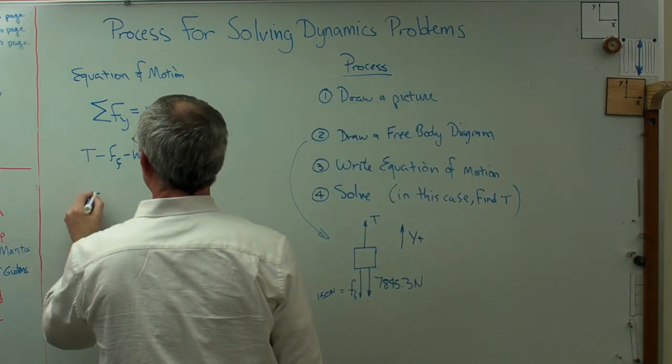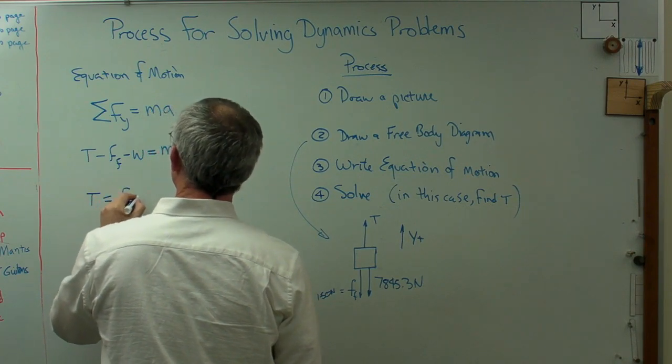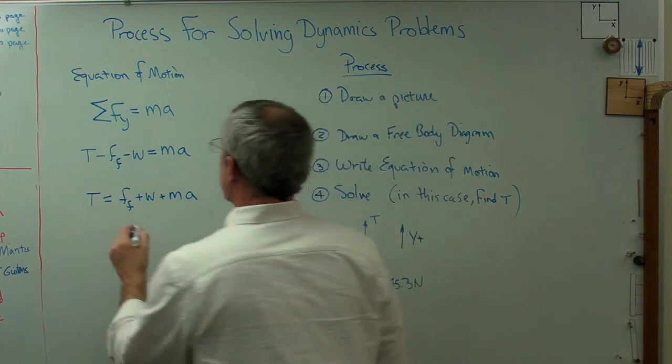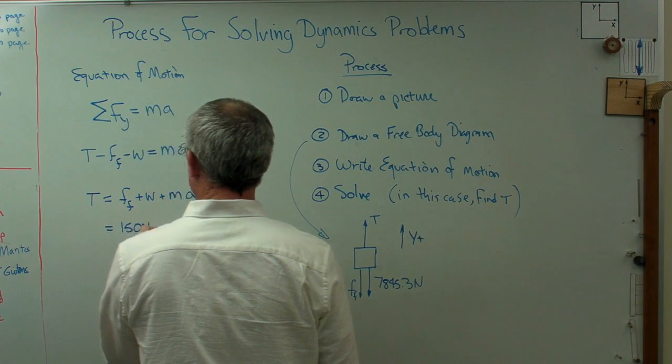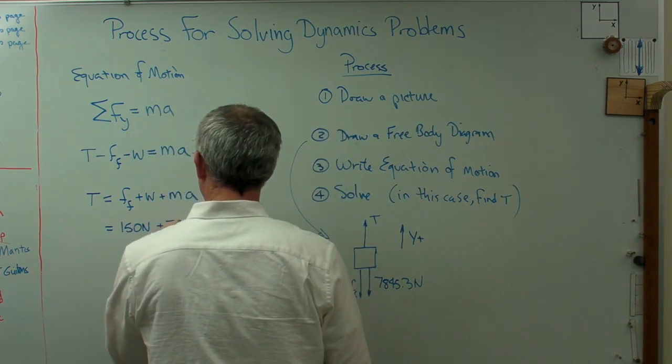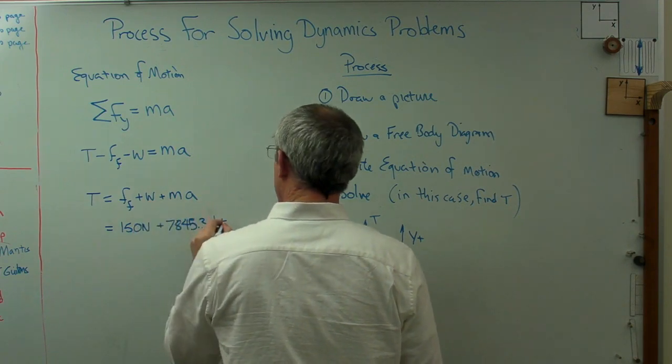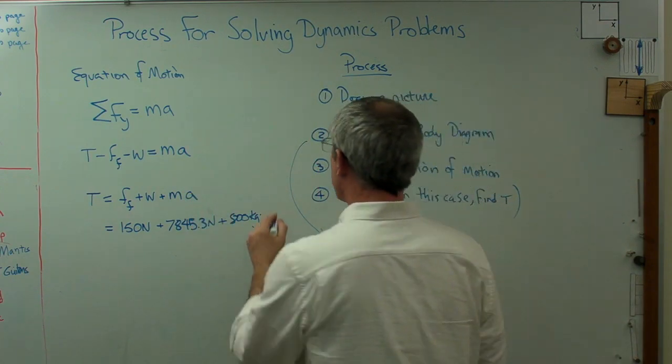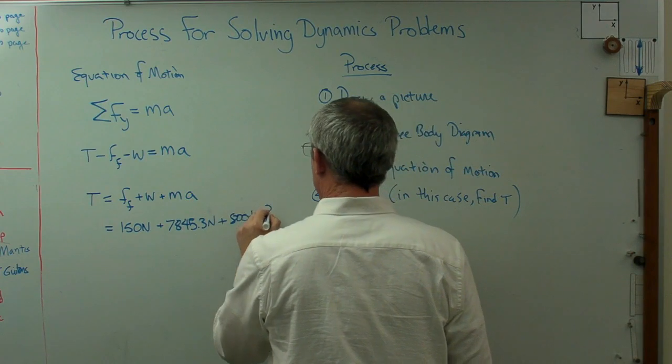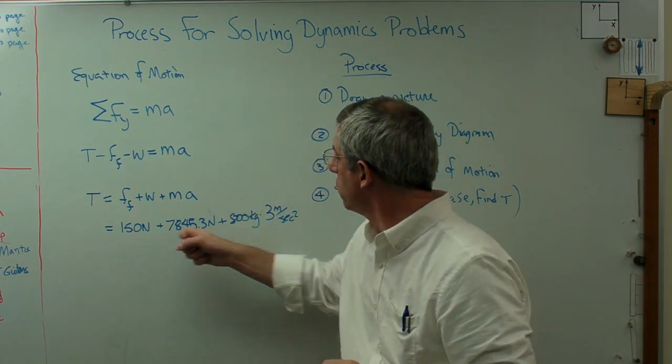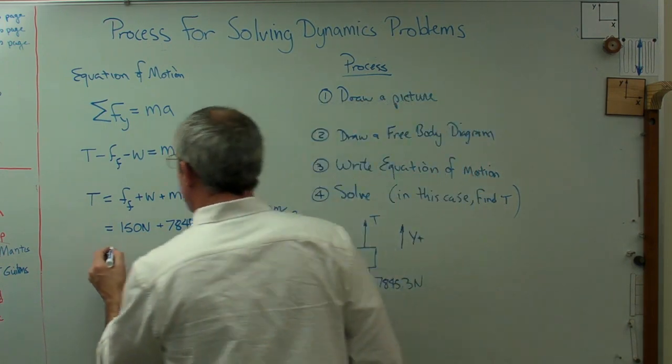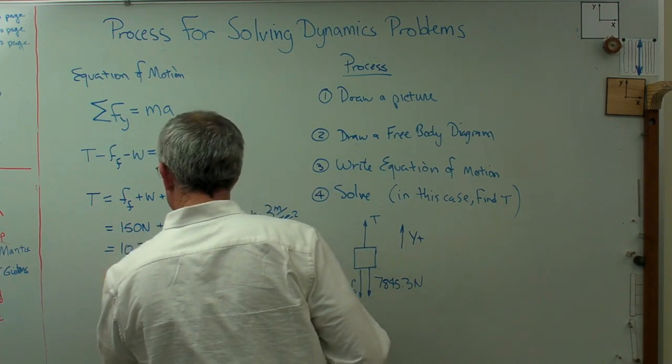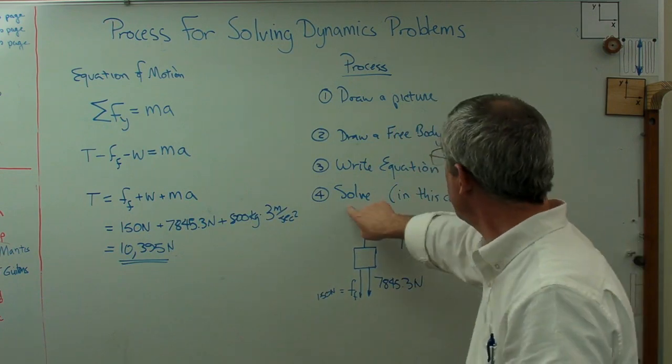So we've got all these forces acting here. I want to solve for T. Let's just put that on one side of the equal sign. So we'll put all the things we don't know on one side of the equal sign and all the things we do know on the other side. That stuff's all known. That's the thing we don't know. Well, let's just start plugging numbers in. 150 newtons for the friction plus 7845.3 newtons for the weight plus mass now is 800 kilograms times our acceleration, which we know is 3 meters per second squared. So the units are all going to work out. Newtons, newtons, kilogram meters per second squared, that's a newton. And when I crank all that out, I get 10,395 newtons. That's the tension in my rope. So I've now done that. I've gone through all four steps.